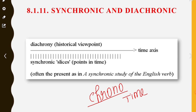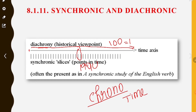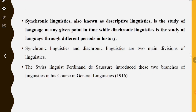Here you have an image where one particular period starts and continues. For example, 100 years — one century — or one particular year, for example 1990, we call it a synchronic study. Synchronic linguistics, also known as descriptive linguistics, is the study of language at any given point in time.